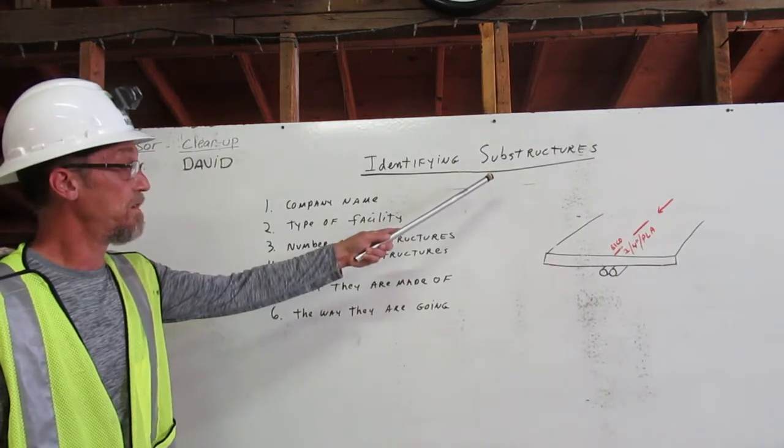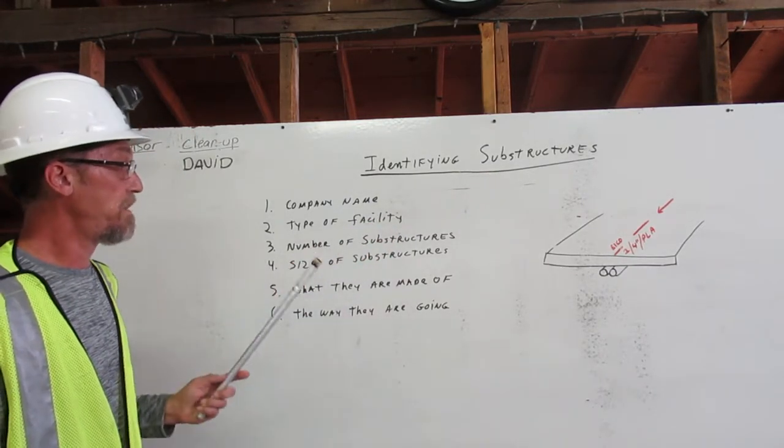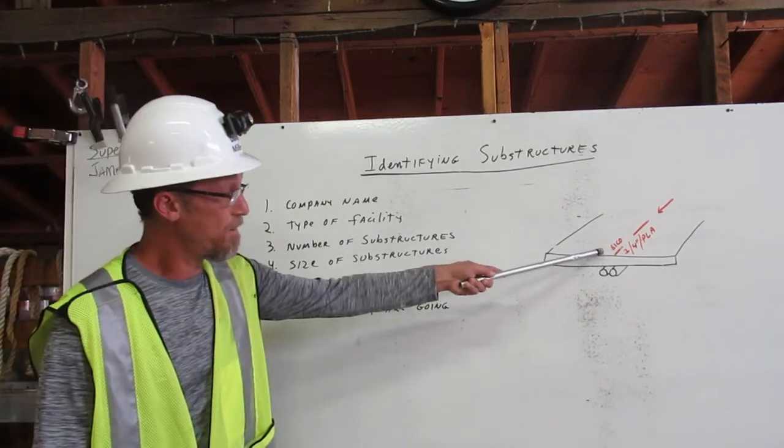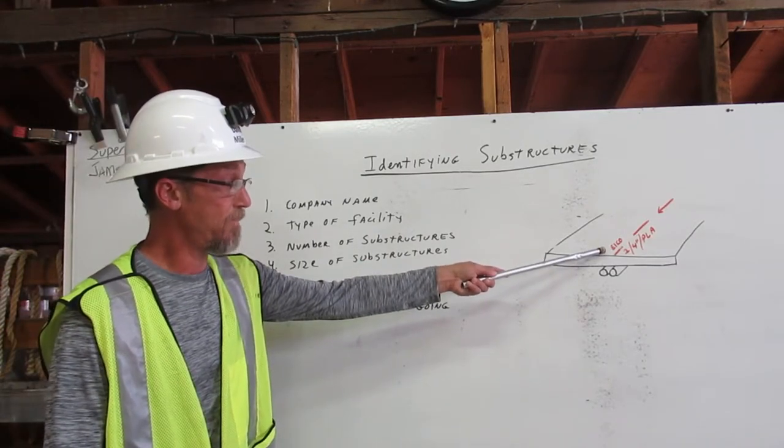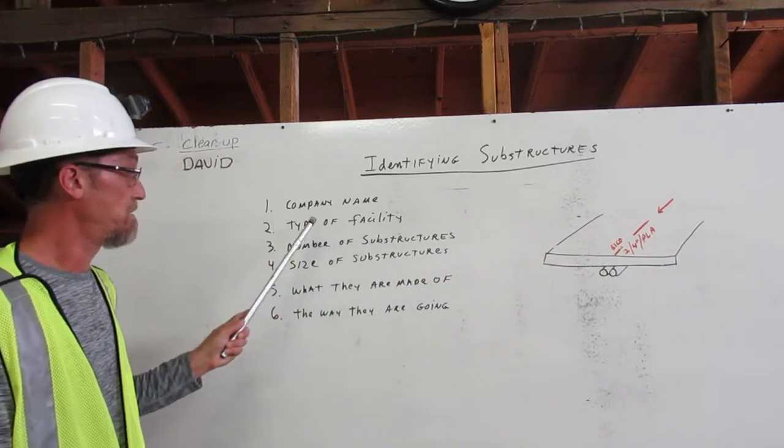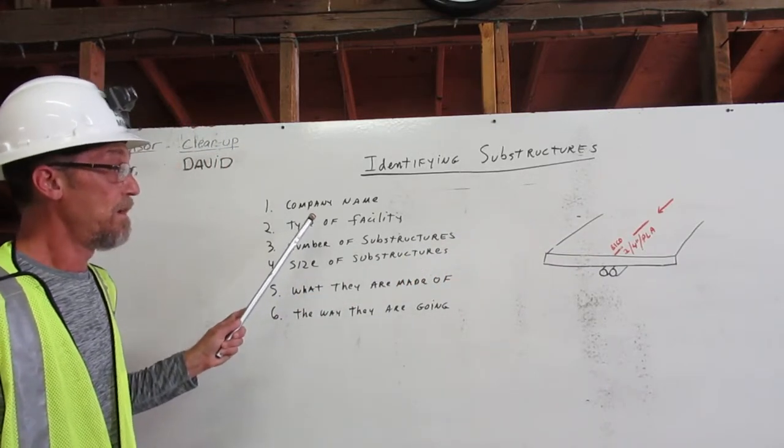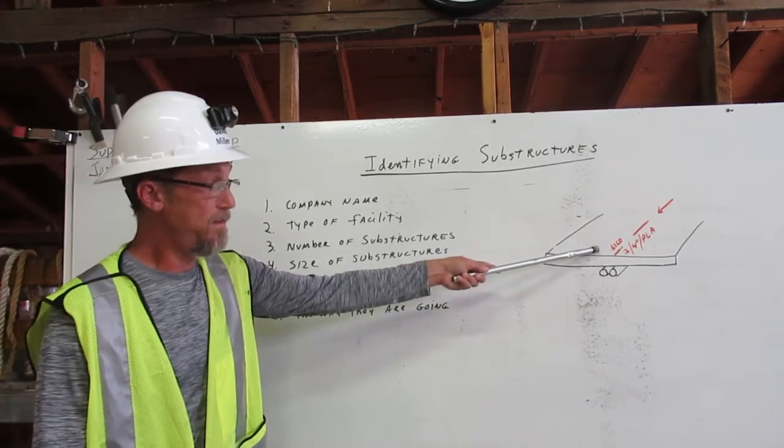Identifying substructures. Markers tell us company name. Company name is Elko. These markers also tell us type of facility. It is in red. It is electrical.